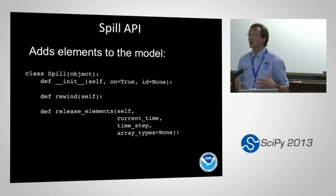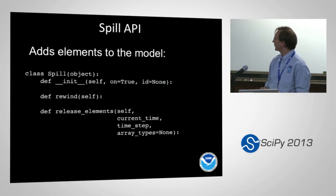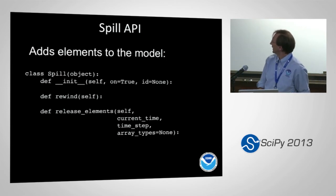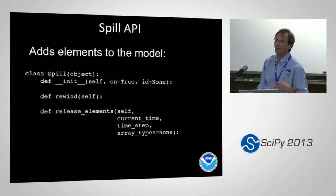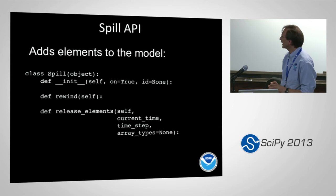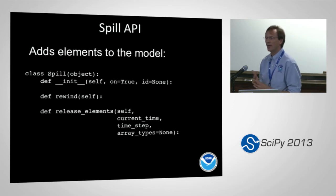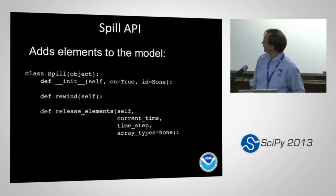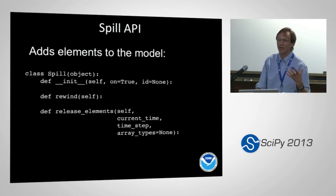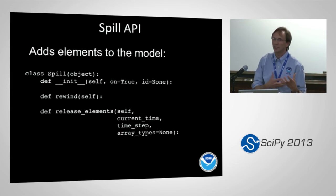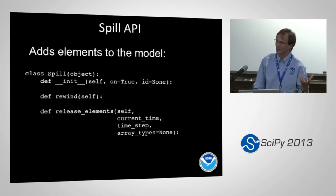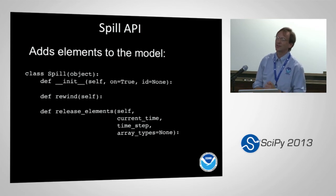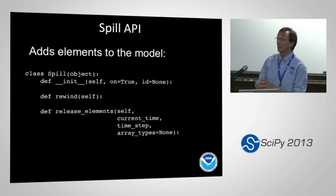Another thing you might want to do is have a new way to add elements to the model. This is the API for a spill: it has an initialization, an on/off flag, a rewind method to reset itself, and a release_elements method. release_elements gets the current time and time step, and an array_types attribute specifies the types of arrays that need to be created as new particles are made — this comes from the spill container, which is aware of what different movers need.